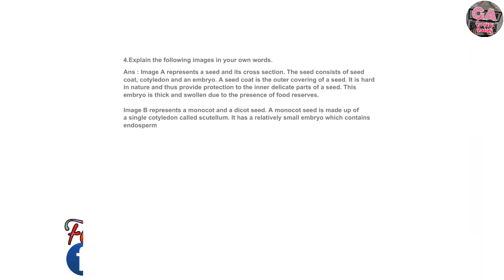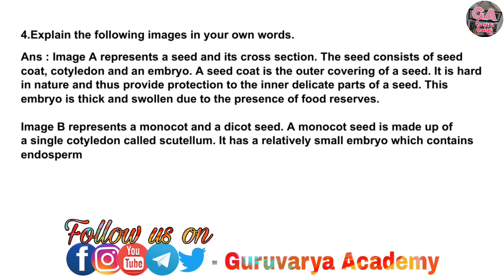Now move towards the fourth question: Explain the following images in your own words. Image A represents a seed and its cross-section. The seed consists of a seed coat, cotyledon, and embryo. A seed coat is the outer covering of a seed — it is hard in nature and provides protection to the inner delicate parts. The embryo is thick and swollen due to the presence of food reserves. Image B represents a monocot and dicot seed. A monocot seed is made up of a single cotyledon called a scutellum; it has a relatively small embryo which contains endosperms.